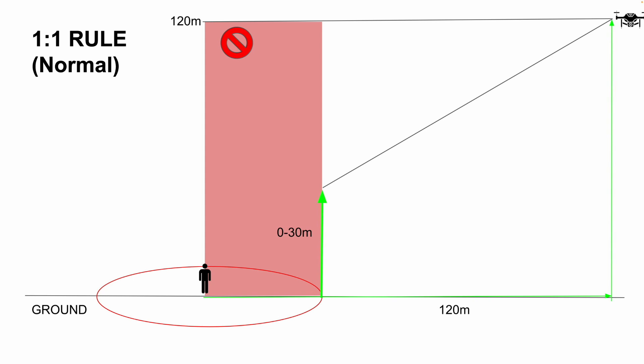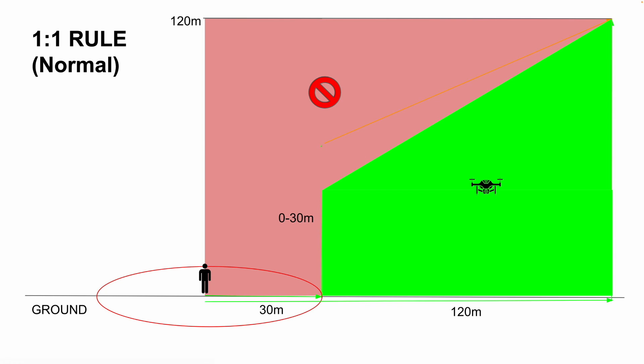To colorize this and give you an understanding of where the drone is allowed and where it's not allowed, I've put on some colors here. The green area indicates where you're allowed to fly with your drone, and the red is where you are not allowed to be with your drone.